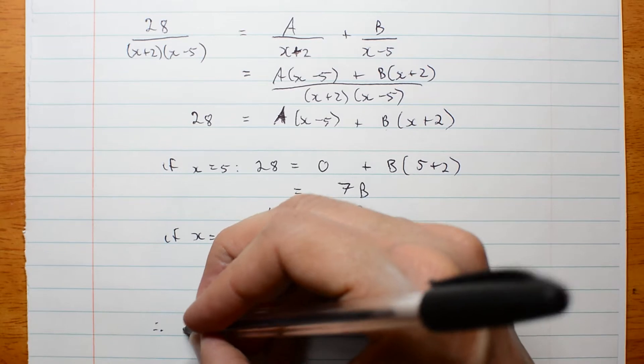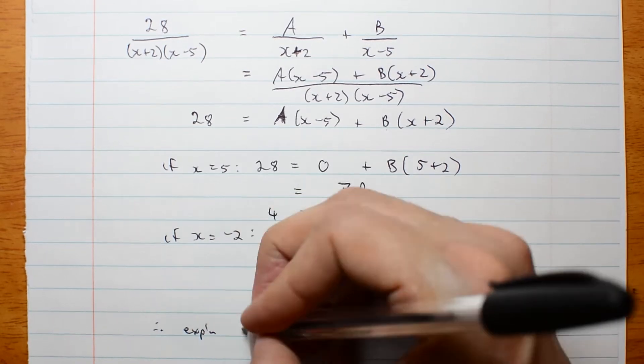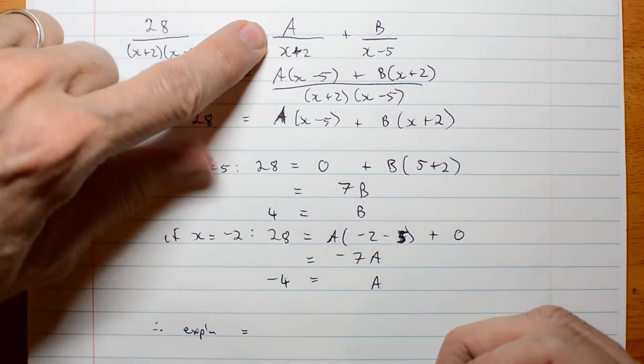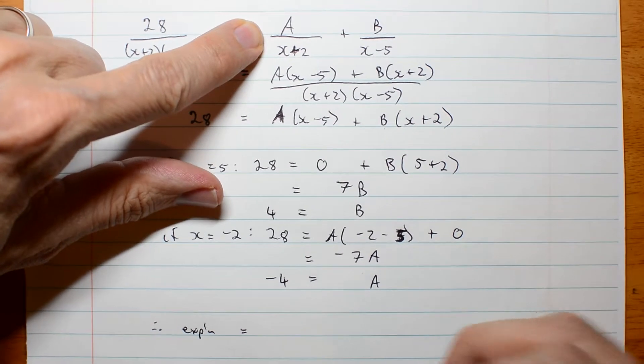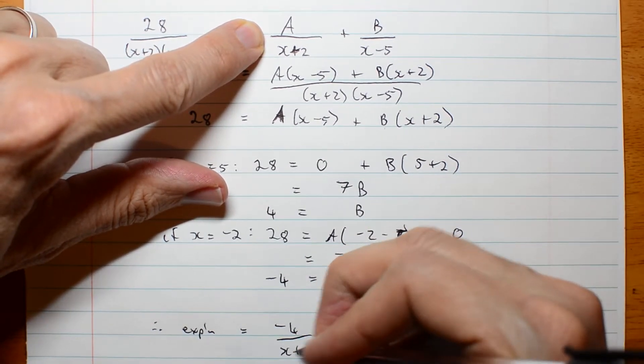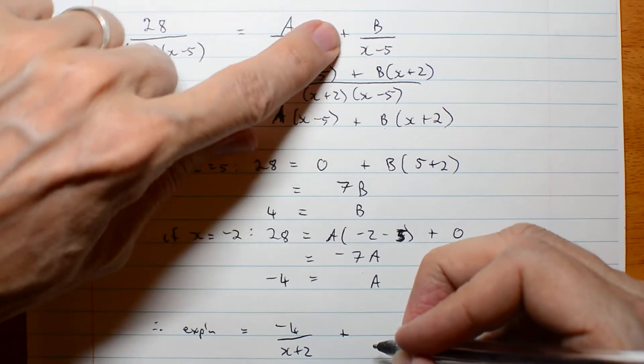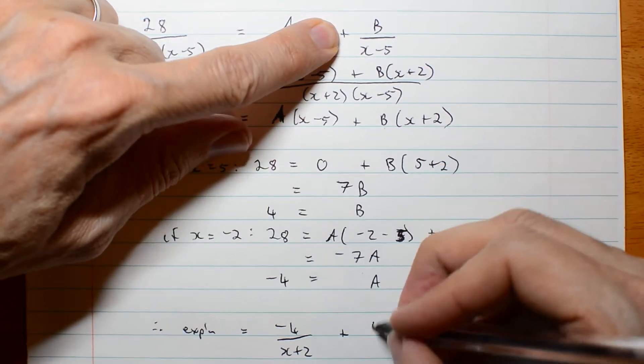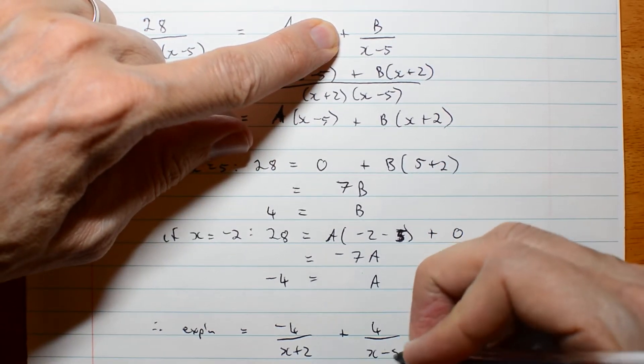Therefore, my expression is a over x plus 2, negative 4 over x plus 2, plus b over x minus 5. That's 4 over x minus 5.